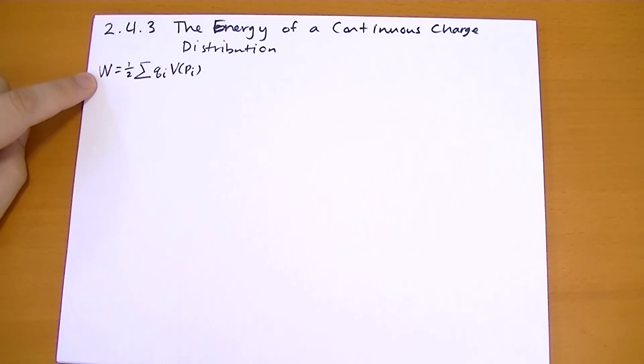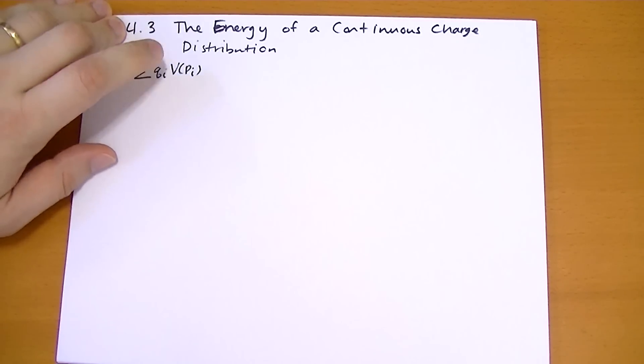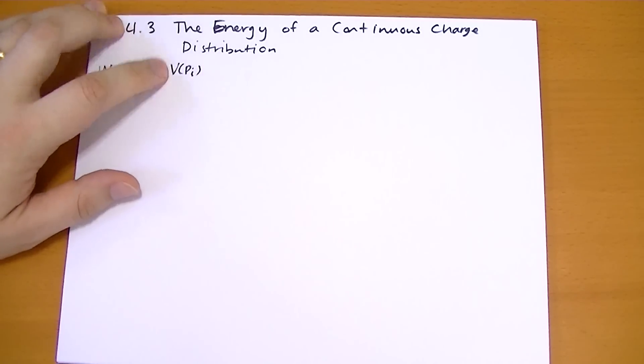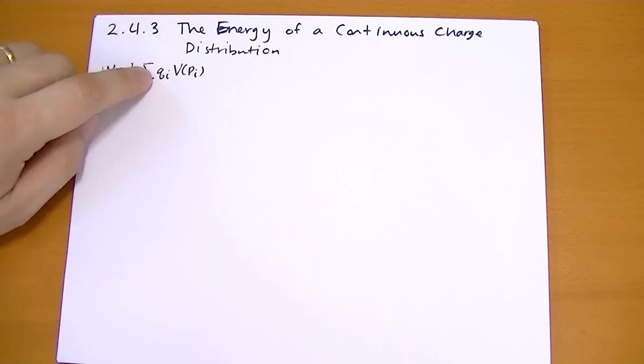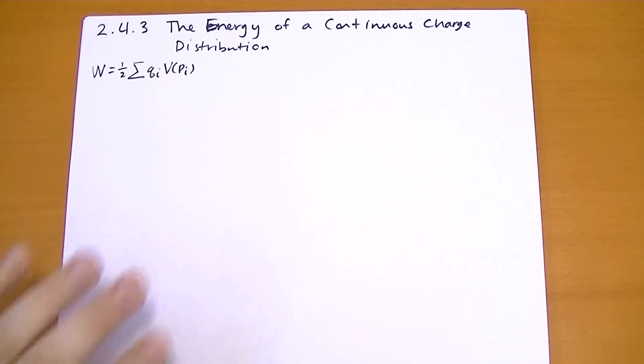We've already found out the energy to assemble a series of point charges is one-half the sum of every point charge times the potential. And caveat, this potential does not include the point charge itself, right?